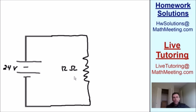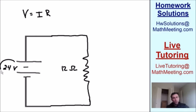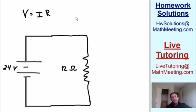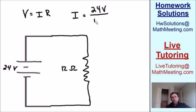Now that we've simplified to one resistor, we can find the total current. Using V = IR, where voltage is 24 volts and resistance is 12 ohms: the current equals 24 divided by 12, which equals 2 amps. The total current running through the circuit is 2 amps.